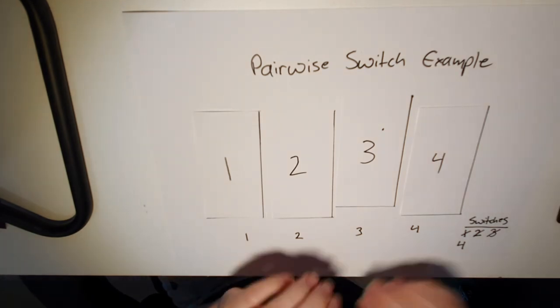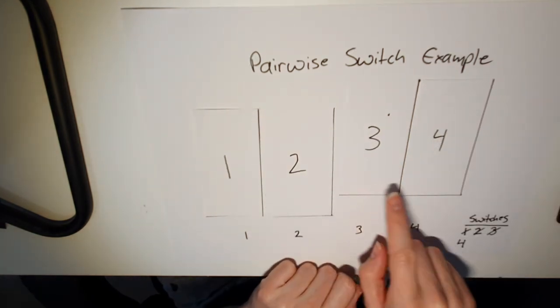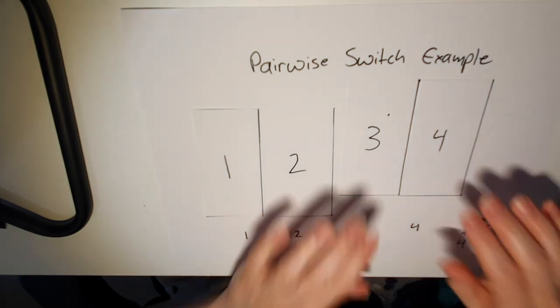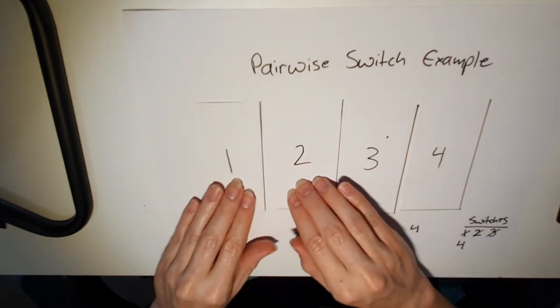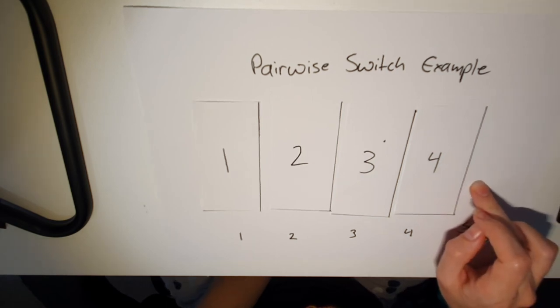Then we check the next pair. Is three less than four? It is. So we leave them alone. Now let's check the order because we're at the end.